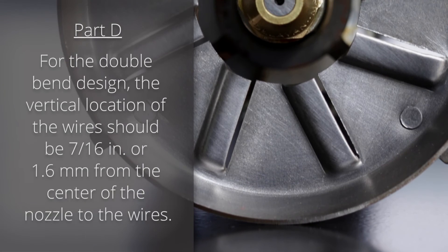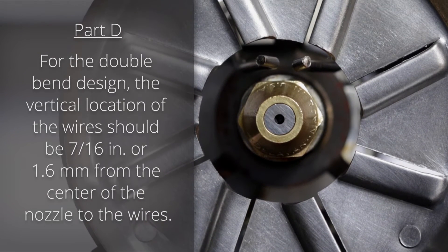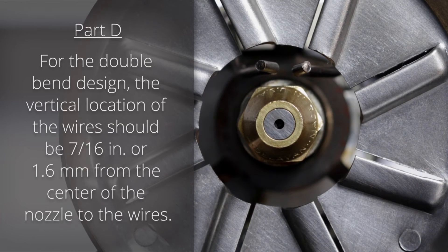Part D: For the double-bend design, the vertical location of the electrode wires should be 7/16th of an inch or 11 mm from the center of the nozzle to the wires.